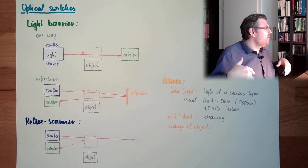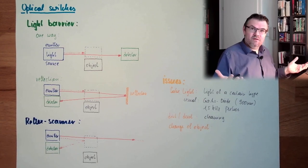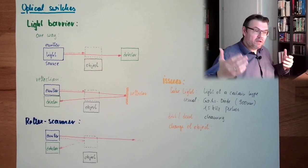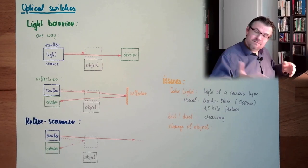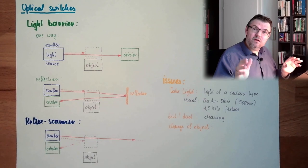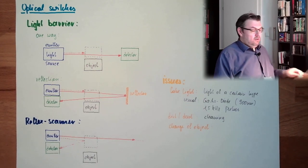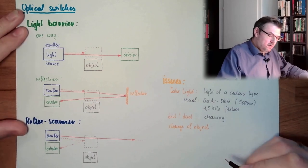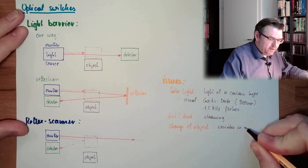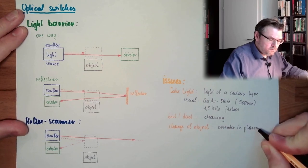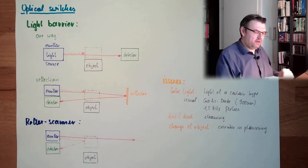This is now one example. There is also, what if the object is emitting light by itself, like glowing coming out of some heater or in a forge or something like that, and it is cooling off, and suddenly it is getting shiny. Any change of object, consider in planning.